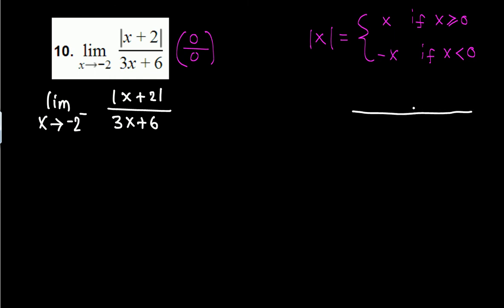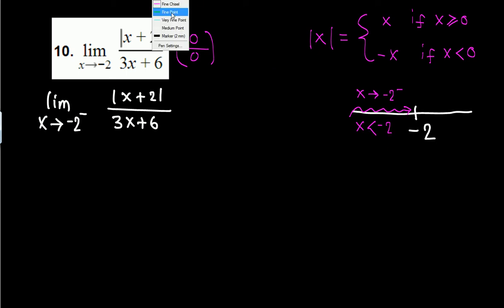Let me draw this on a number line. For the left-hand limit, x approaches negative 2 from the left side, meaning x is less than negative 2. For the right-hand limit, x approaches negative 2 from the right side, meaning x is greater than negative 2.